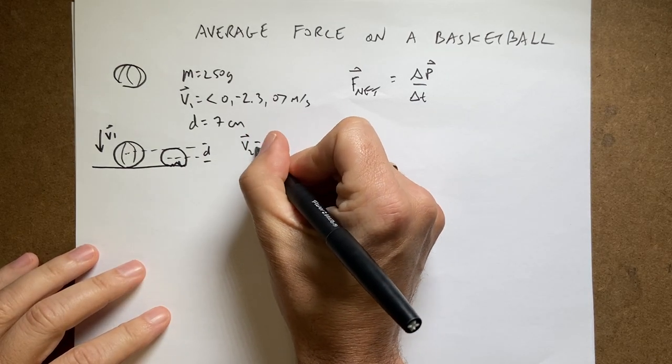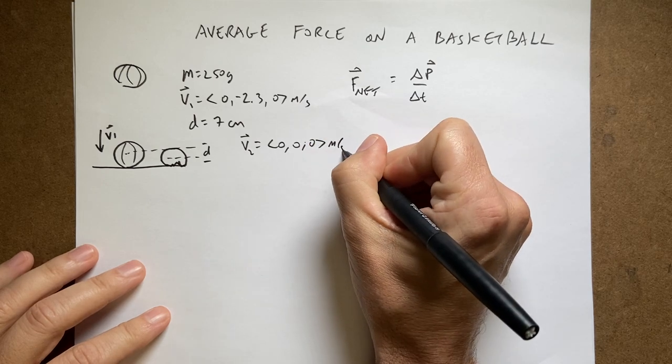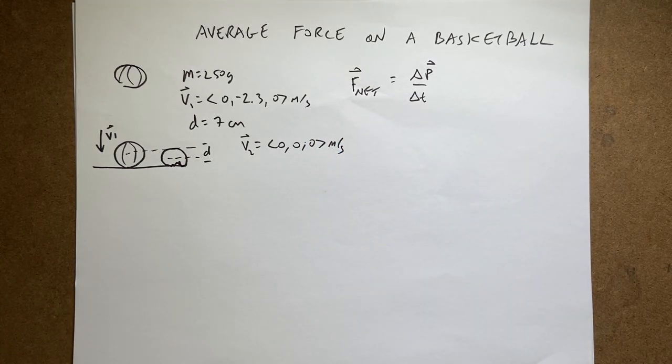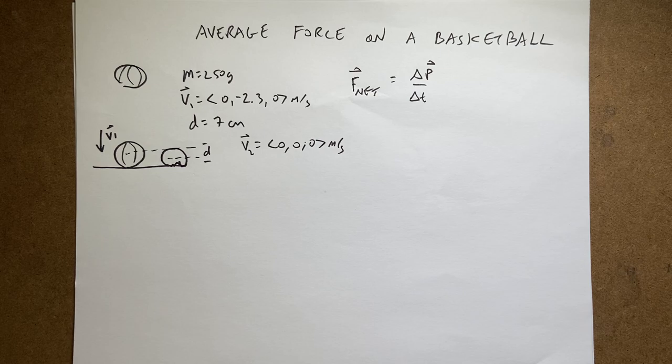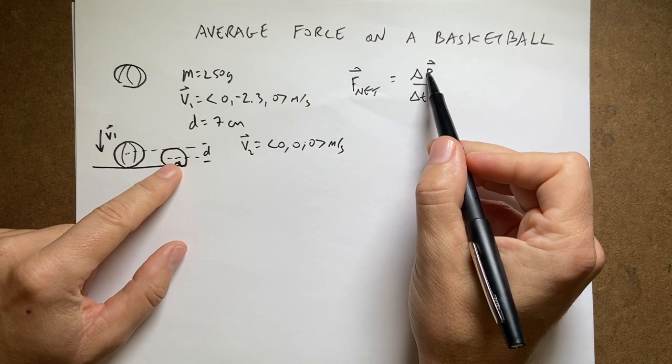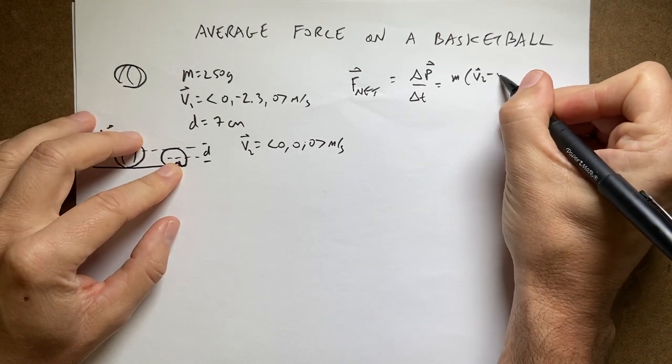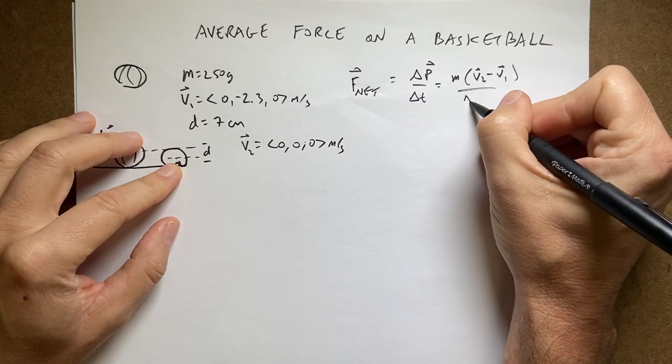v2 is going to be zero, zero, zero meters per second, but I don't know the time. Don't know the time because I could do that right. I could calculate the net force on the ball, delta p easy to find. This is going to be m v2 minus v1 over delta t.